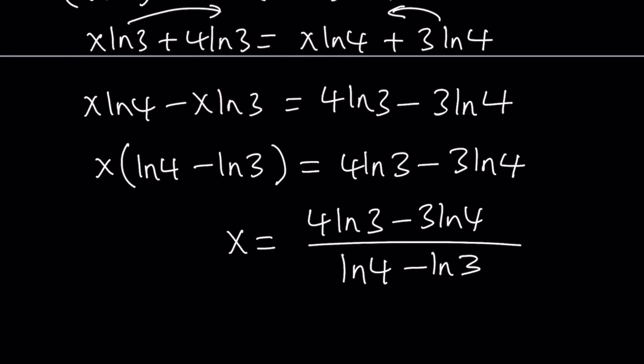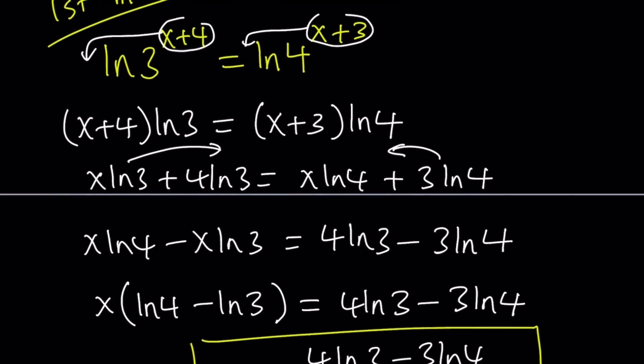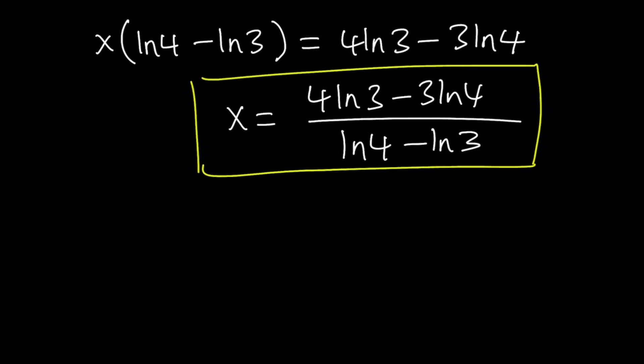Basically what we did was take the natural log of both sides and then bring the exponents down. That technique is usually used when there is a variable in the exponent. If we didn't have a variable, then we wouldn't have to do it. Now we got the answer, let's hold on to that and let's do the second method. Then we'll compare our answers.